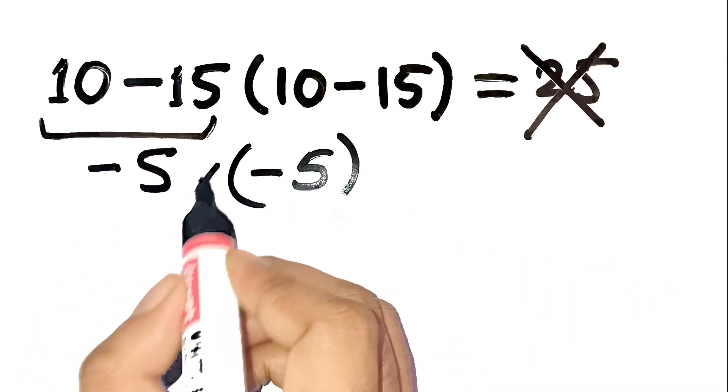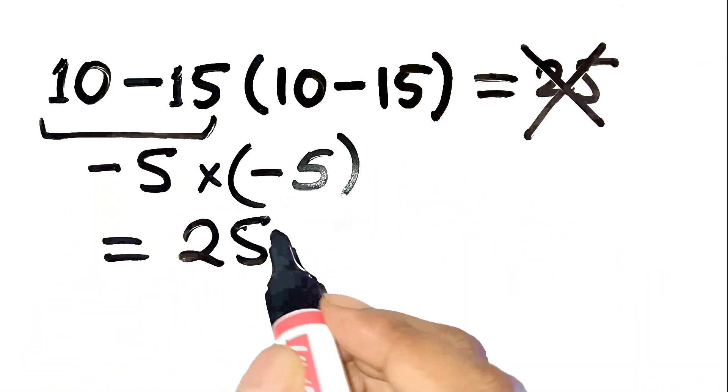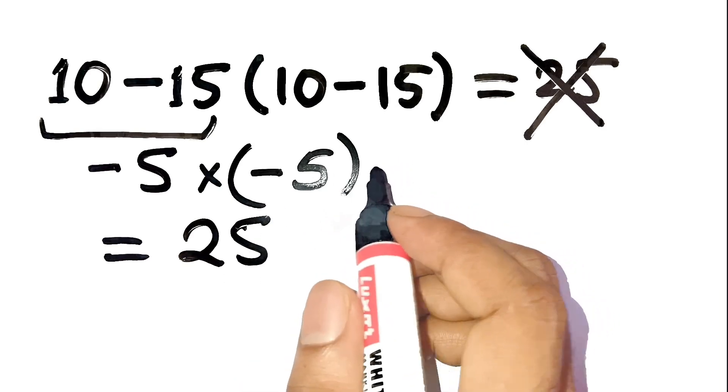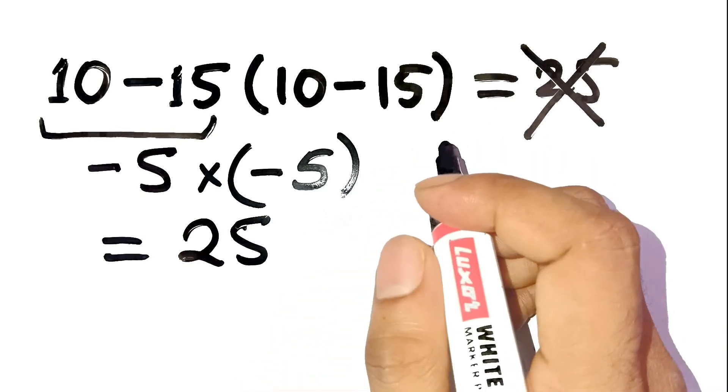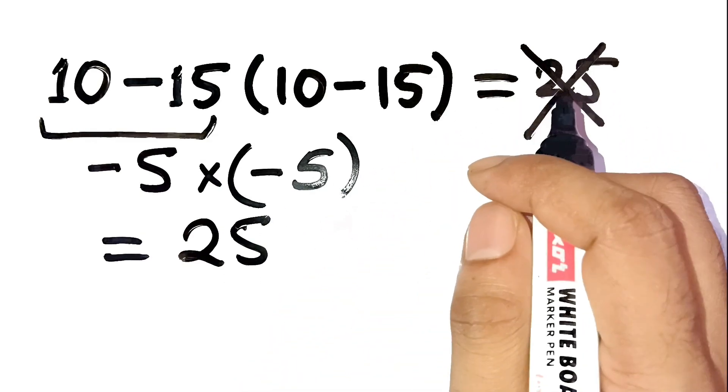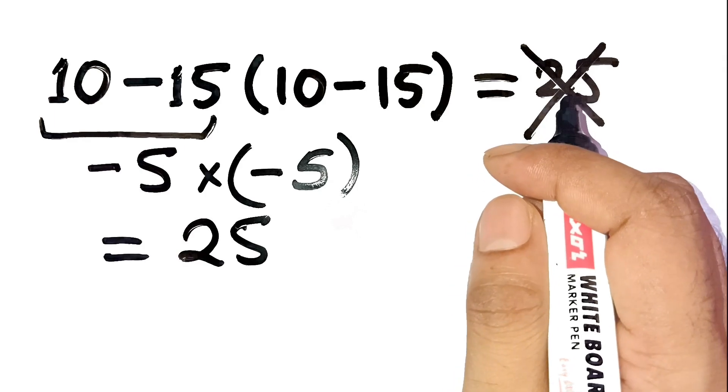Multiply negative 5 by negative 5 gives 25. Boom, looks neat and clean, right? Totally logical at first glance. But that's exactly where most people get tripped up.